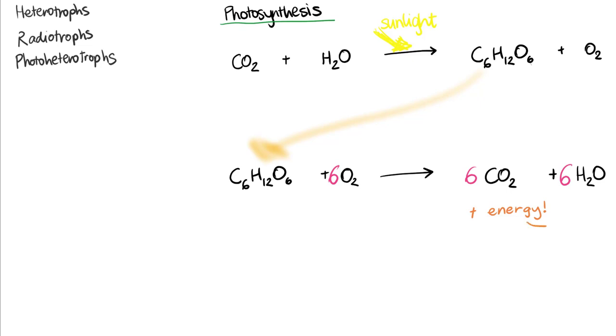So cells use this chemistry whenever they need energy to grow, to create new molecules or break down molecules, if they need to transport things, and if they need to replicate. Some of the energy is also lost as heat, but that also keeps the organism warm.